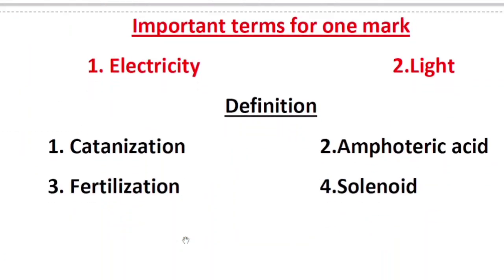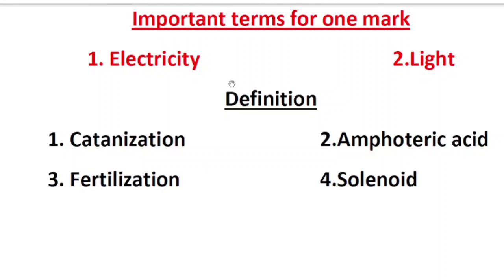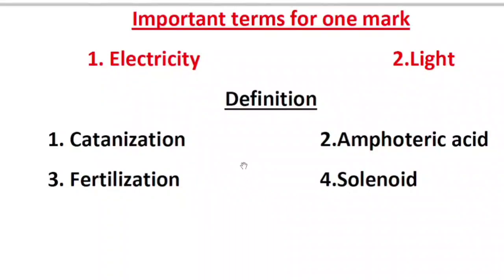Concentrate on important terms for one mark — they come from the electricity chapter and light chapter. SI units are very very important in both electricity and light chapters, so learn the terms and SI units. Also learn definitions — I have given catenation, amphoteric acid, fertilization, solenoid, and many other definitions for one mark, which are very easy.